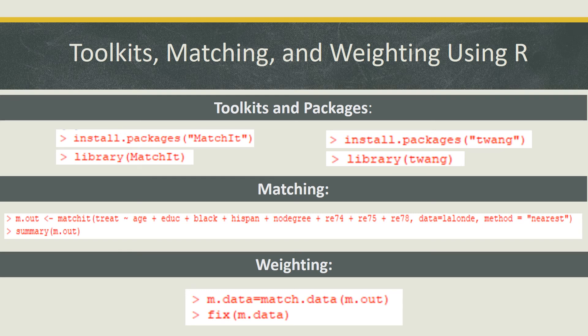By using the Summary function, R will produce a Summary of Balance for all data, a Summary of Balance for matched data, and percent balance improvement. To find weights generated by propensity score matching for all the data in the dataset, we can use the m.data line listed under the weighting section, followed by the Fix function. This will produce a table with corresponding weights assigned.